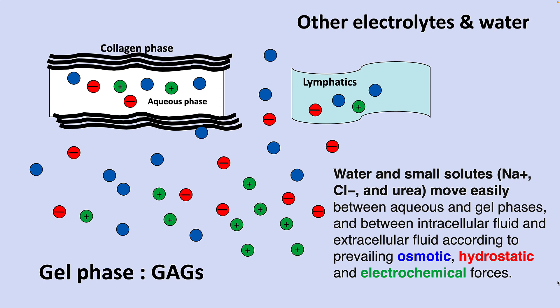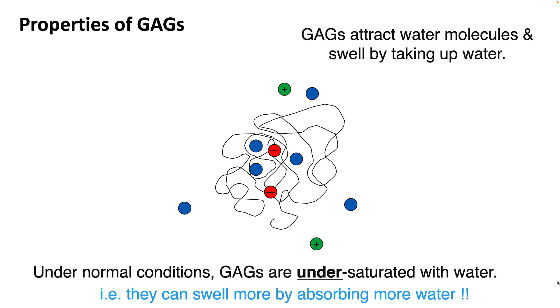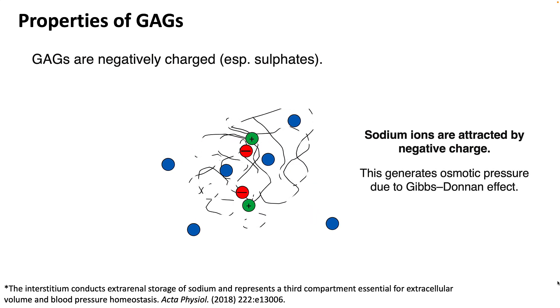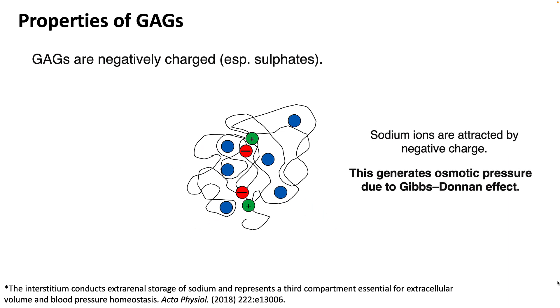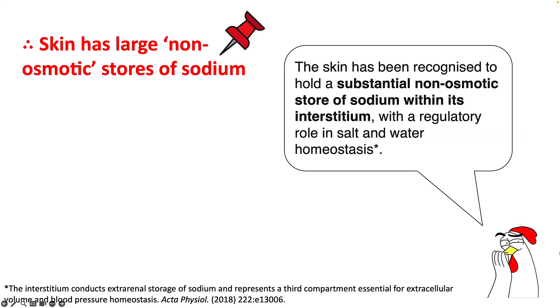Other electrolytes, water, and small molecules can move easily between the aqueous and gel phases according to their osmotic, hydrostatic, and electrochemical gradients. Glycosaminoglycans attract water molecules and swell up by absorbing water. Under normal conditions, GAGs are under-saturated with water, meaning they can swell further. Being negatively charged, they attract sodium ions, generating an osmotic pressure via the Gibbs-Donnan effect, thereby absorbing more water. Importantly, the sodium associated with glycosaminoglycans is non-osmotic sodium, as it is in very close proximity to the GAGs. Skin has been shown to have a large non-osmotic store of sodium, playing an important regulatory function in salt and water homeostasis.